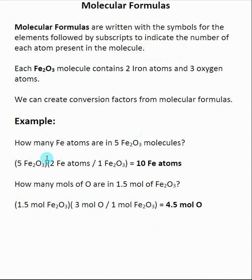So an example of this is, say, I have five Fe2O3 molecules, and I want to know how many Fe atoms or iron atoms are inside of there. We get the ratio from the idea that this molecular formula says that in every one Fe2O3 molecule, there are two Fe atoms.